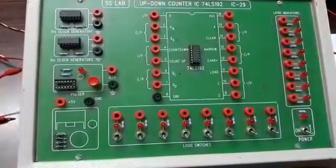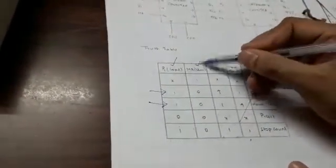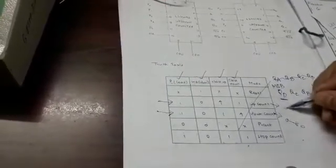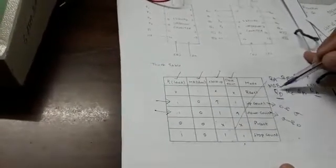This is the truth table which we verify. It contains PL load, clear, clock up, and clock down. For the combination with clock up selected, we get up count from 0 to 9. If you select clock down, then down count happens from 9 to 0. The outputs QA, QB, QC, QD are taken from the IC.